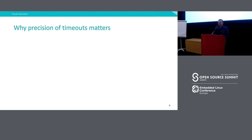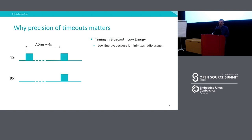And why does the precision of timeouts really matter? Because I'm from Nordic, the example here will be Bluetooth. There is a protocol called Bluetooth Low Energy, and it's low energy because it tries to minimize radio usage. The peripheral side — the receiving side on the picture — turns the radio receiver on only when it has to exchange data. The central part on the picture, the transmitter, periodically asks the peripheral if it has something to send.